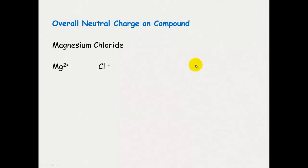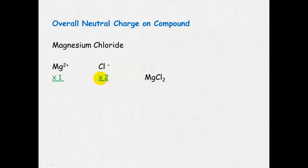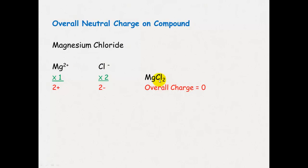When writing ionic formulae, it's important that the overall charge on the compound is neutral — it has no overall charge. So when magnesium and chloride form an ionic compound, magnesium has a 2+ charge and the chloride ion has a 1− charge. If we have one magnesium and two chlorides, we get a total positive charge of 2 and a total negative charge of 2, giving an overall charge of zero. So we need one magnesium — indicated by no number — and two chloride ions, shown with a subscript 2.